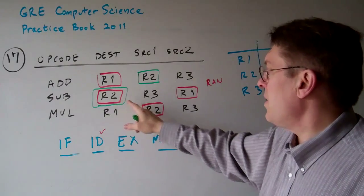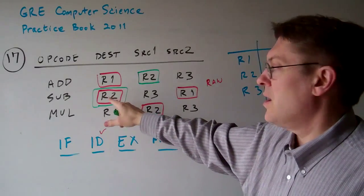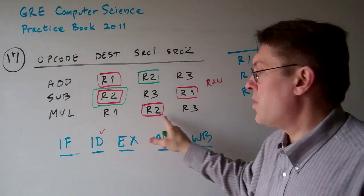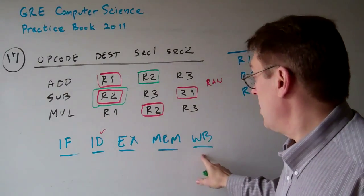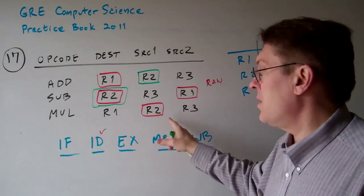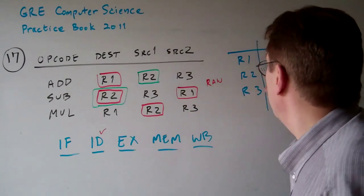The same thing happens with register 2 in the second two instructions. This one is writing register 2, but how does instruction 3 know that it's been written back when it's executing? It's not going to know that. So there's two RAW hazards.